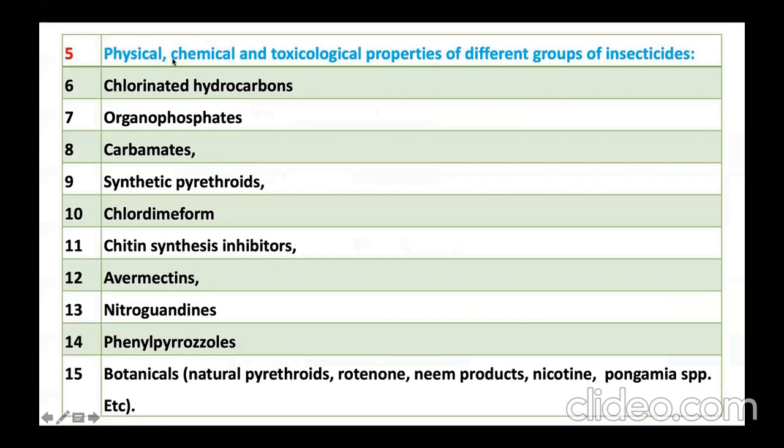Then coming to the next topic, that is physical, chemical, and toxicological property of different groups of insecticide. Here, these are the different groups of insecticide: chlorinated hydrocarbon, organophosphate, carbamate, synthetic pyrethroid, chlordimeform, chitin synthesis inhibitor, ivermectin, and all those. You need to study the physical - how it is present in granule form, how it looks, and then chemical composition. What is its chemical composition, like which group it belongs. And then toxicological property, like is it a contact poison, stomach poison, which kind of poison. You need to study in detail for all these groups.